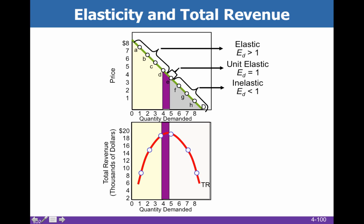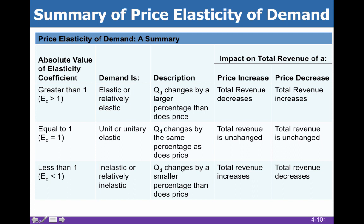Here is our summary of elasticity of demand. Greater than 1 means elastic, and quantity demanded changes by a larger percentage than price. On total revenue: as we increase price, total revenue decreases; as we decrease price, total revenue increases. This summary chart is going to be very useful.